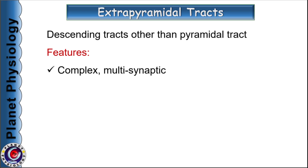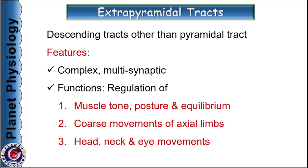Usually, these are complex multi-synaptic pathways and are concerned with regulation of muscle tone, posture and equilibrium. They also regulate gross movements in axial limbs and movements of head, neck and eyes. Parts of the CNS like basal ganglia, cerebellum and even sensory areas in the cortex modulate the activity of the extrapyramidal system. Understanding the system is crucial for comprehending reflexes, complex movements, locomotion and postural control.